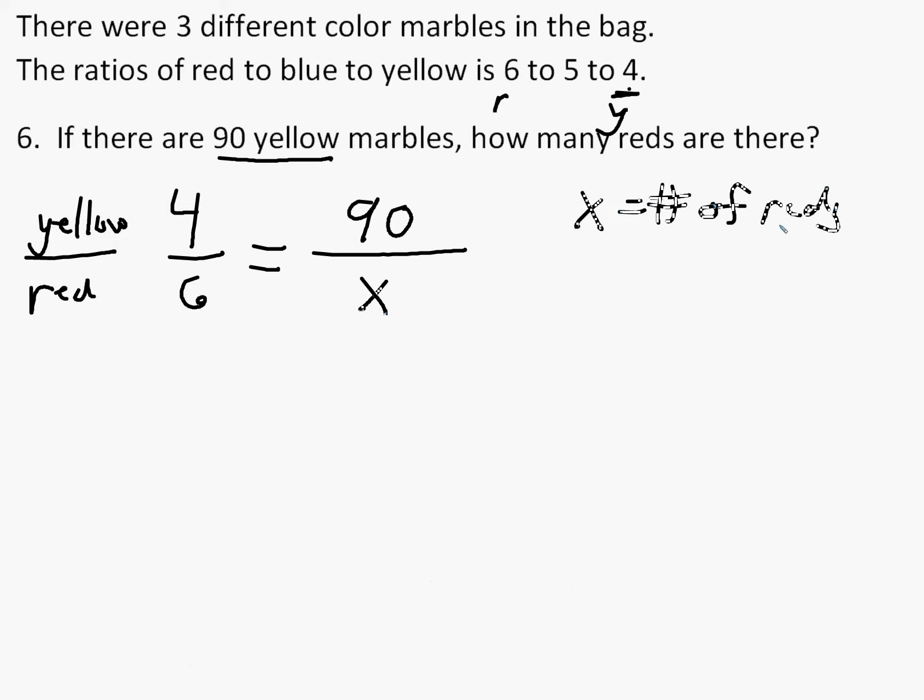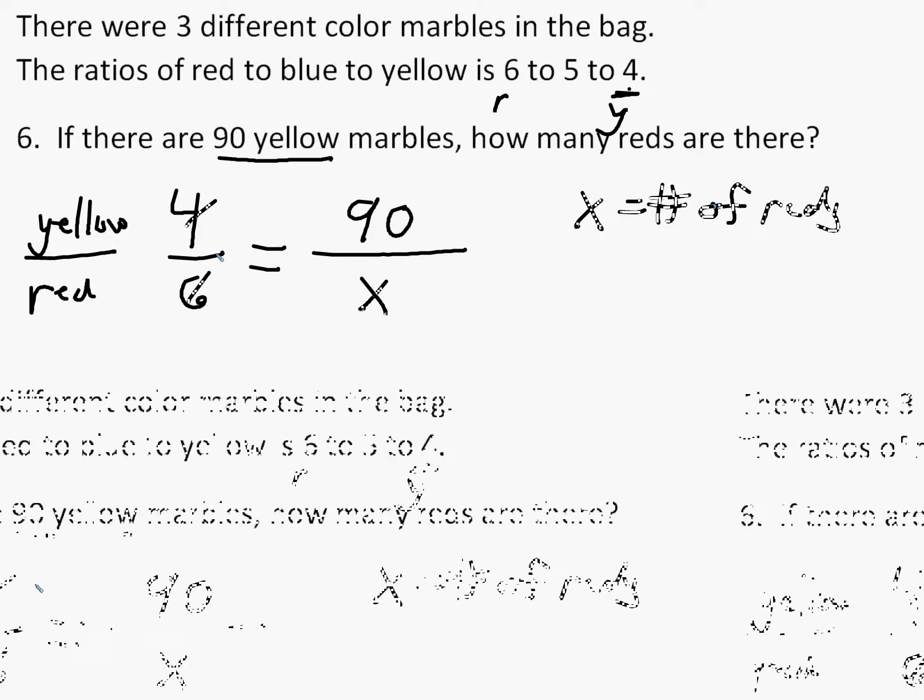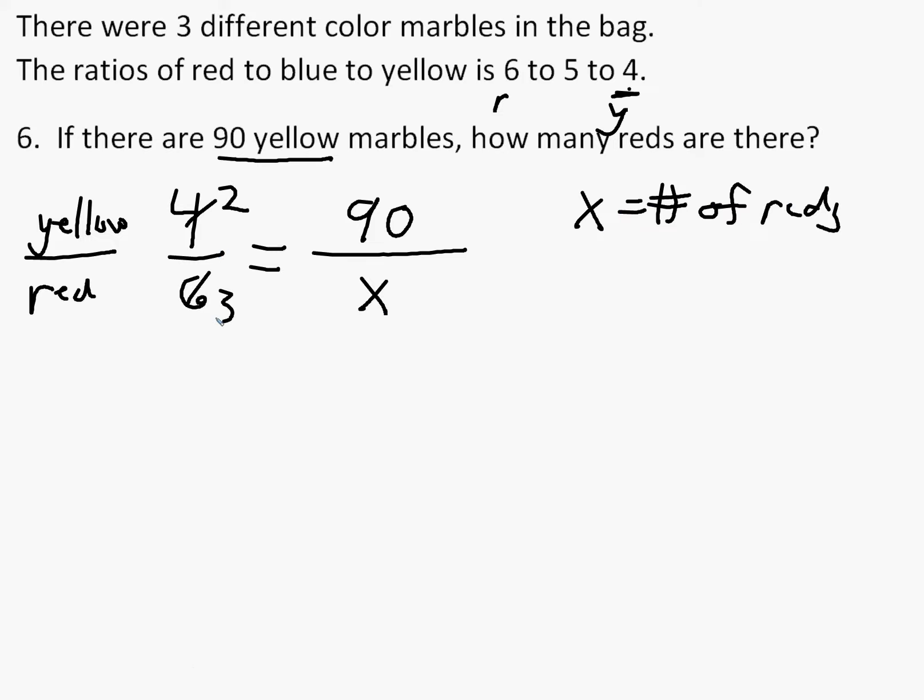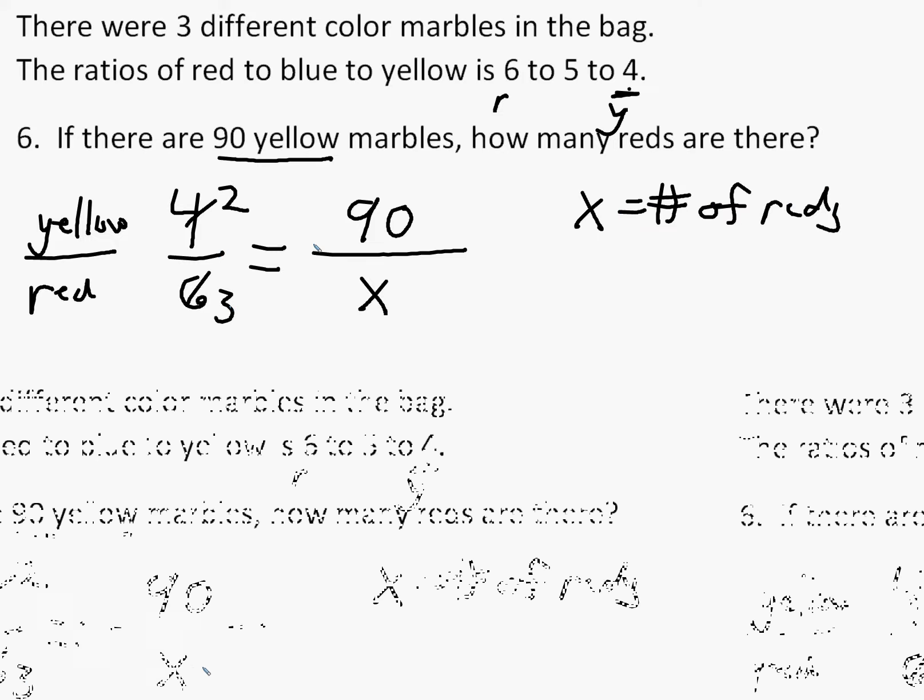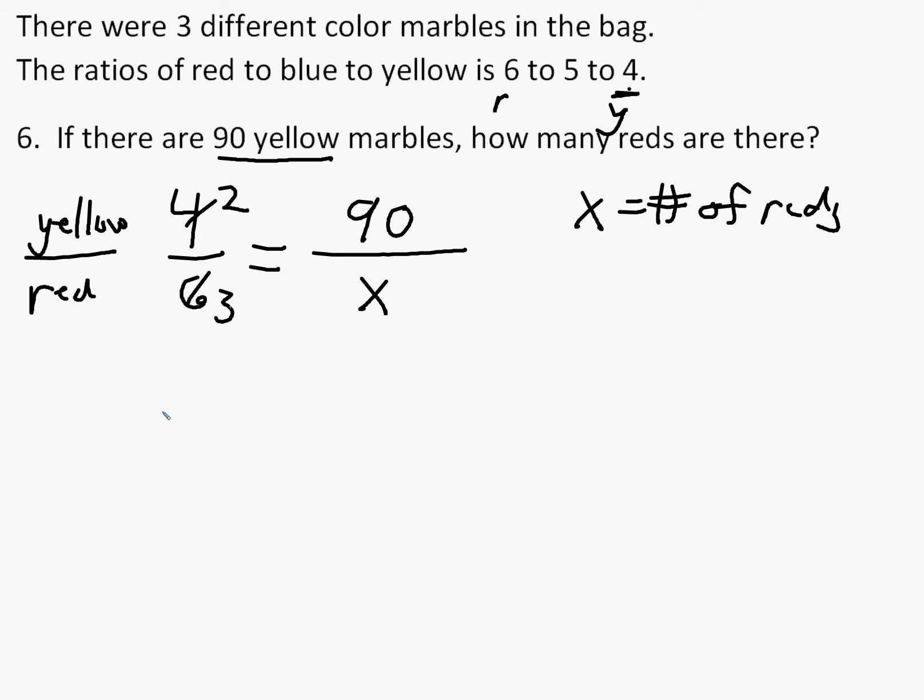And we can solve that. Well, notice we can reduce this, which we did before on the earlier problem. We reduced 4 and 6. And so when we solve a proportion, we can cross multiply. So we have 2x equals 3 times 90. If you multiply that out, you get 270.